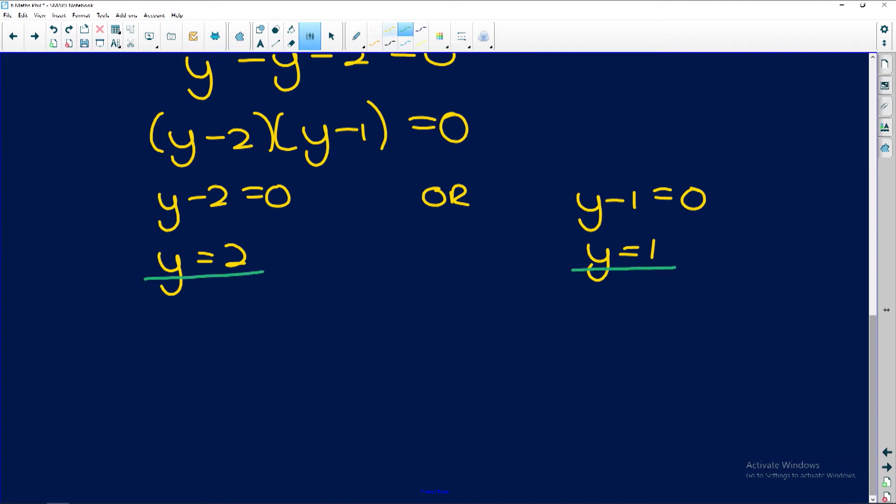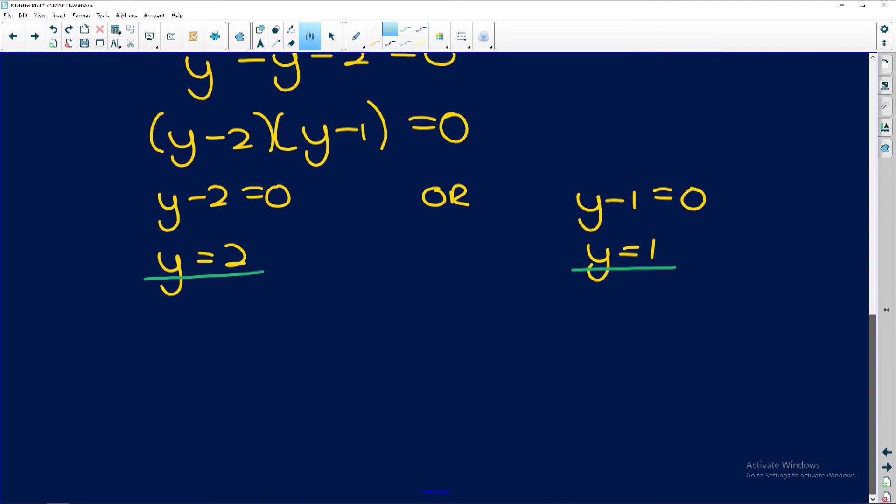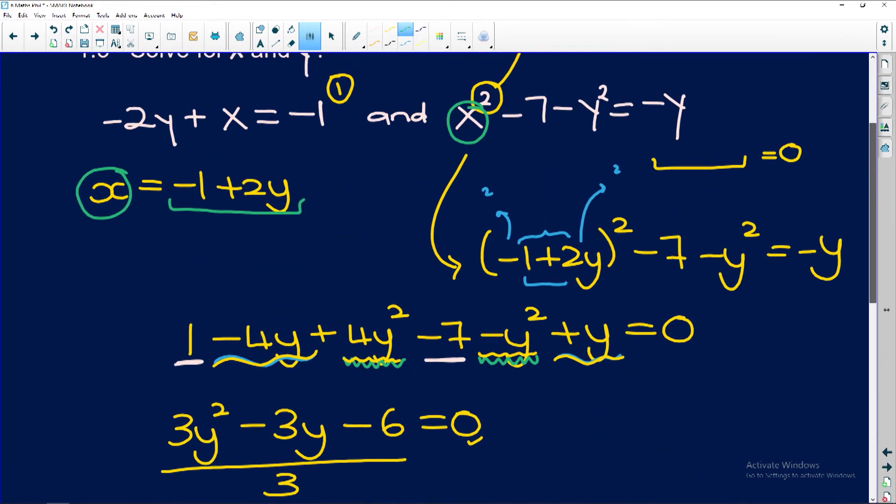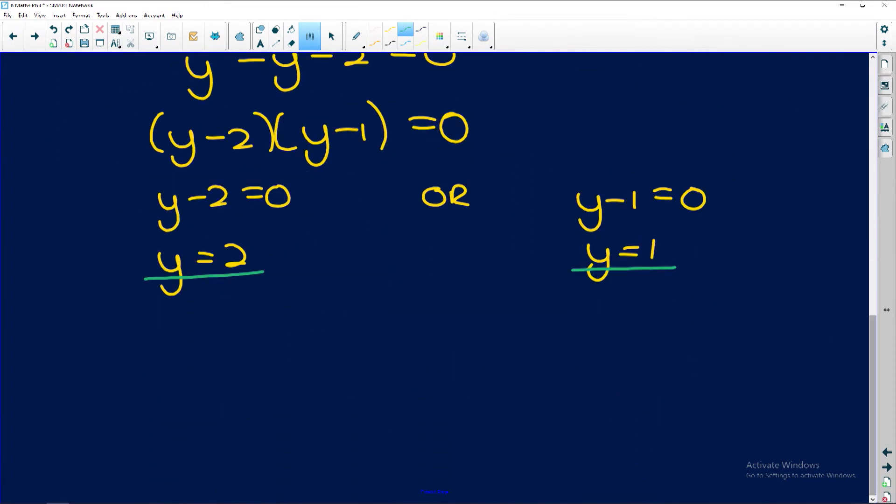But guys, remember, solve simultaneously for x and y. So remember, right at the beginning we found this expression for x. x is equal to negative 1 plus 2y. So now that we found our y values, we can substitute them in. So x is equal to negative 1 plus 2 multiplied by 2, substitute the y in. And so we get negative 1 plus 4, which is equal to 3.